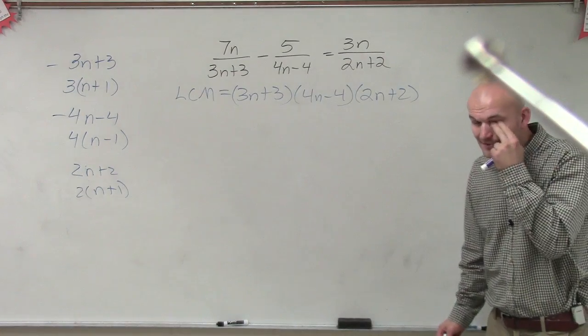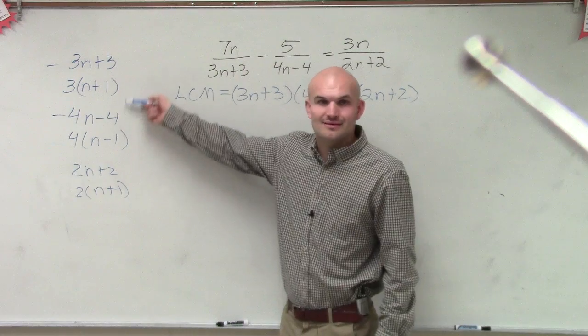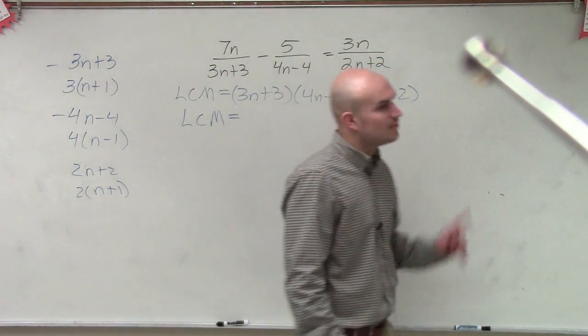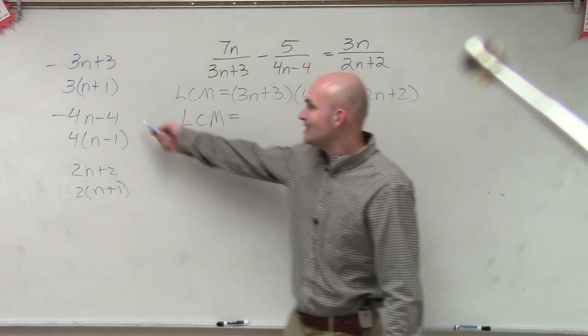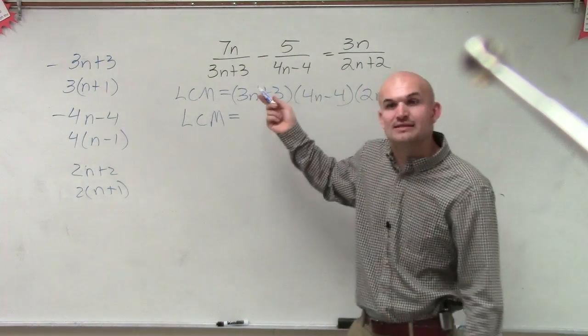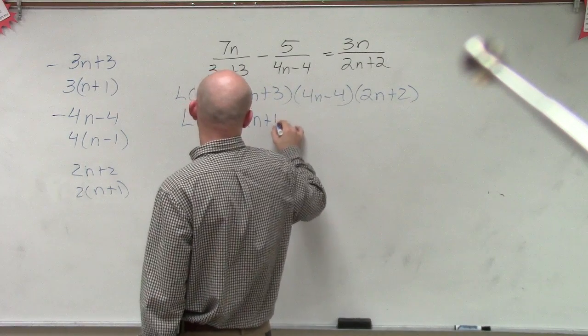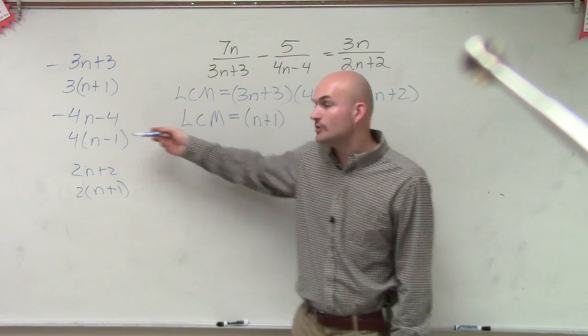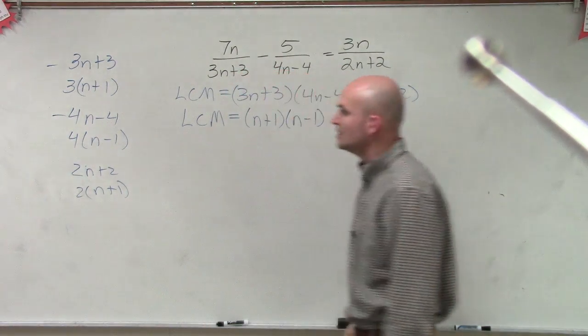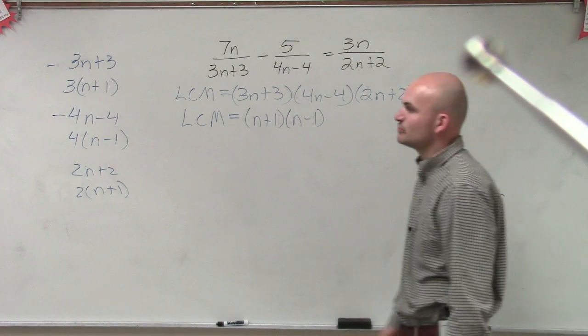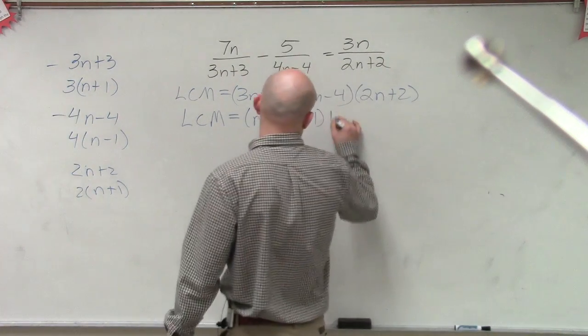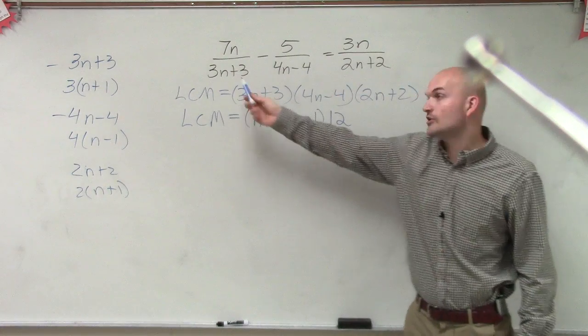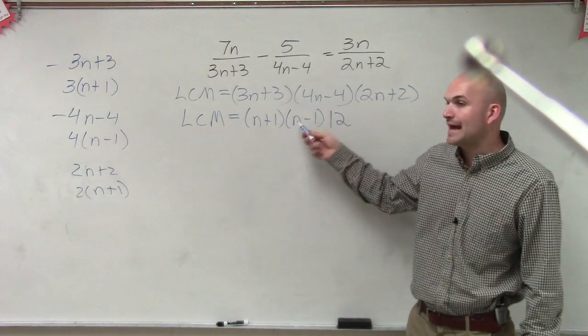So do you guys notice some commonalities now that we have? What's common between these? n plus 1. So when we do our LCM, how many n plus 1's do we need to include? Just one. It's the common. These already have n plus 1 in common. We just need to get the other denominator to have n plus 1 in common. So our denominator is now going to include n plus 1, and n minus 1. And then what numbers do they all have in common? What would the least common multiple be between 2, 4, and 3? 12.